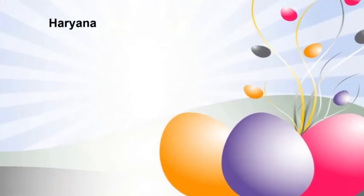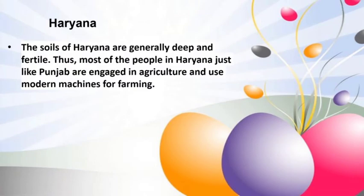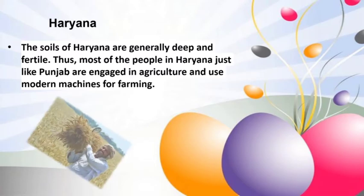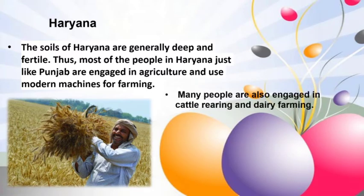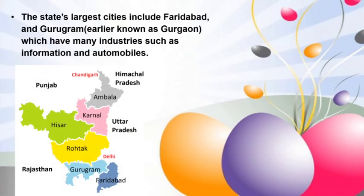The soils of Haryana are generally deep and fertile. Most people in Haryana, just like in Punjab, are engaged in agriculture and use modern machines for farming. Many people are also engaged in cattle rearing and dairy farming. The state's largest cities include Faridabad and Gurugram, earlier known as Gurgaon, which have many industries such as information technology and automobiles.